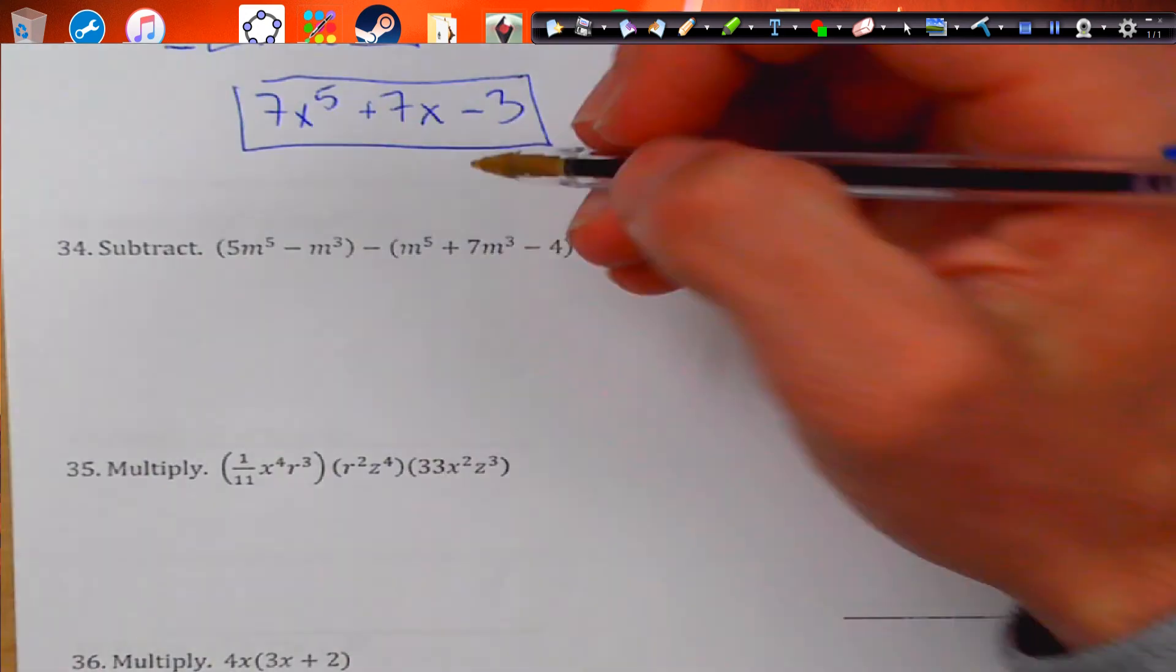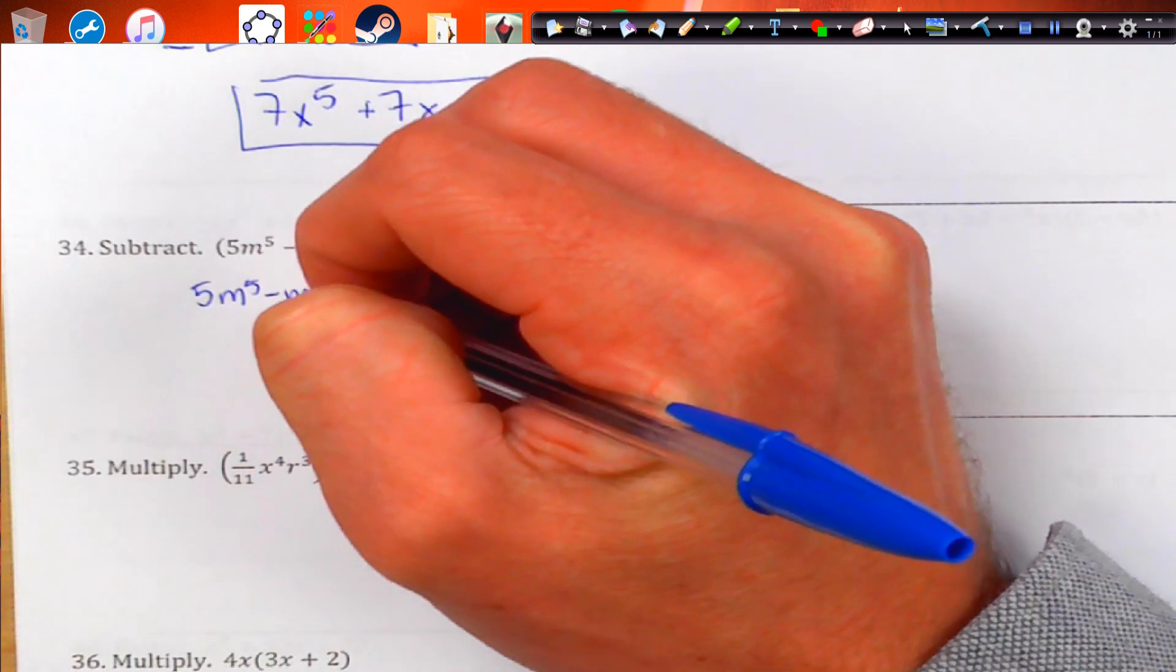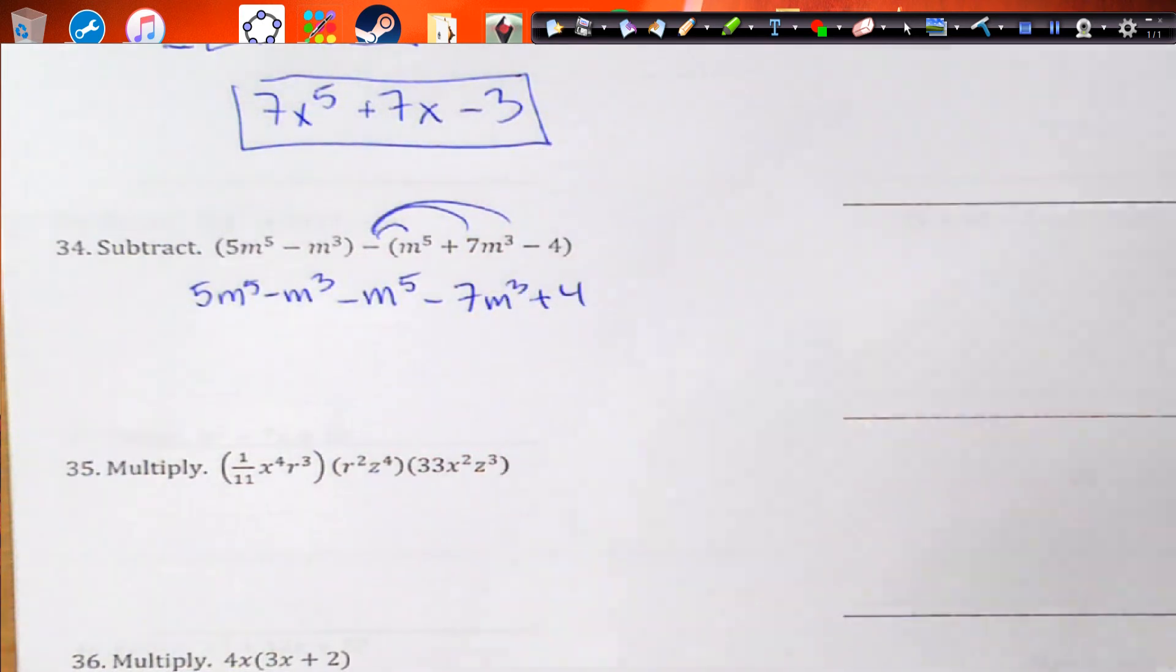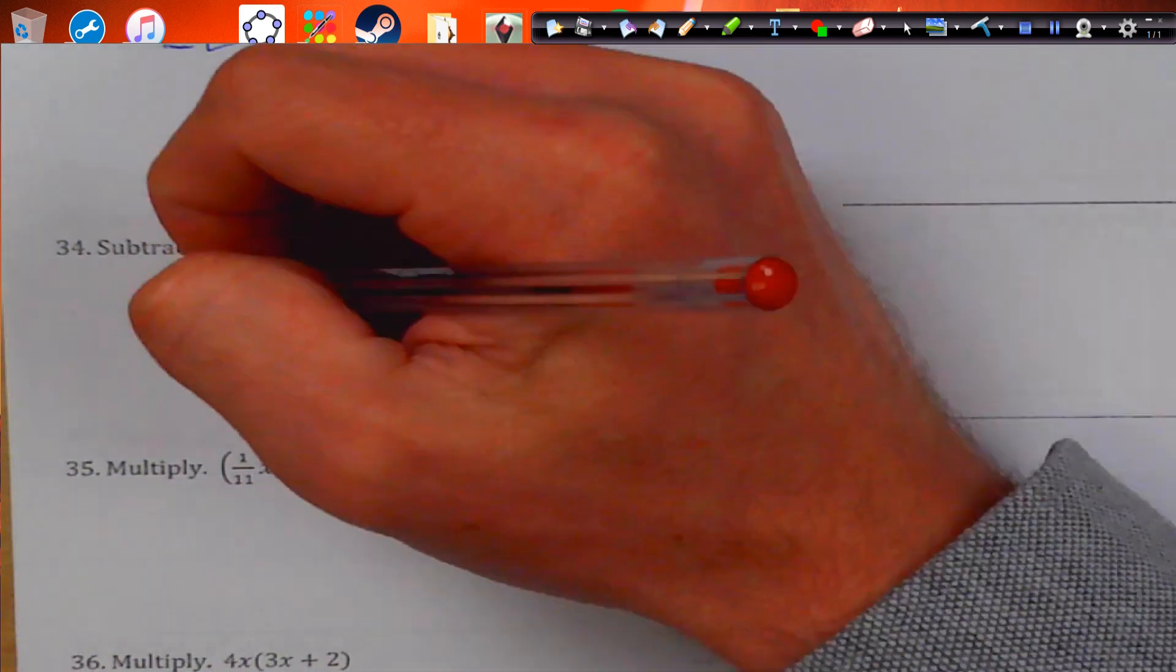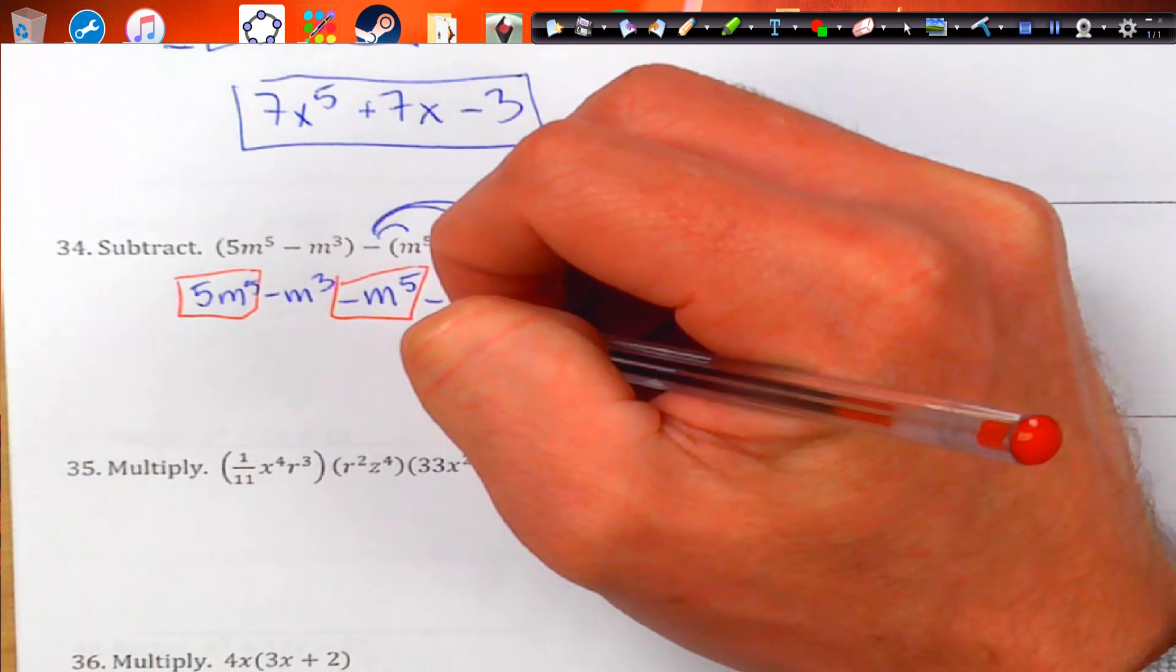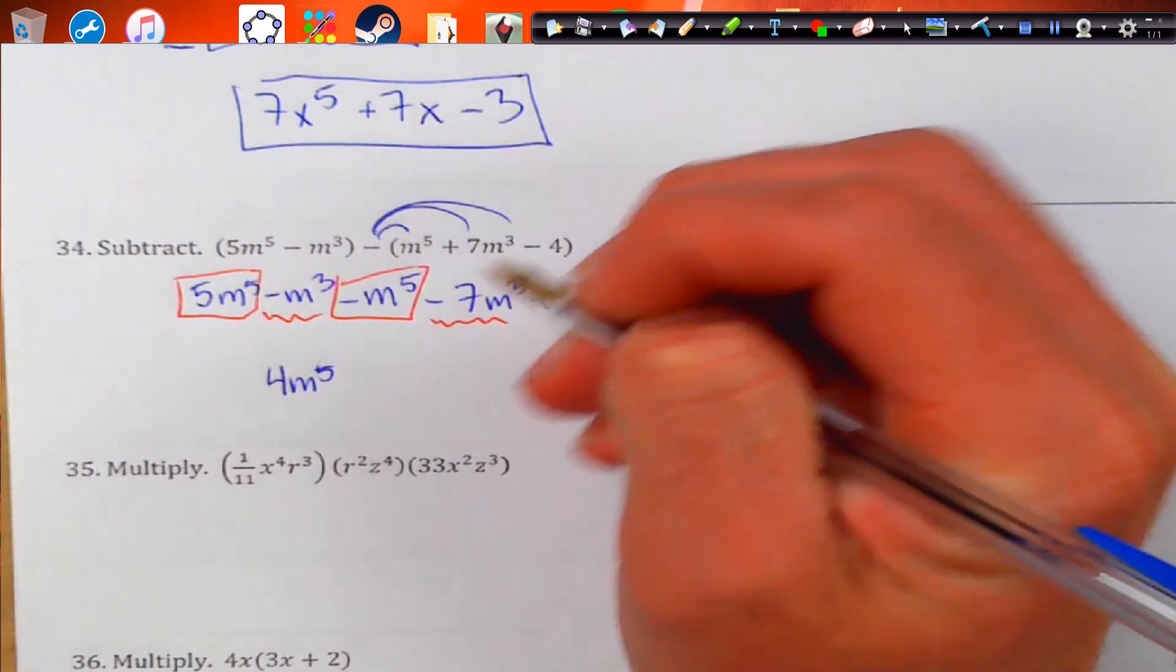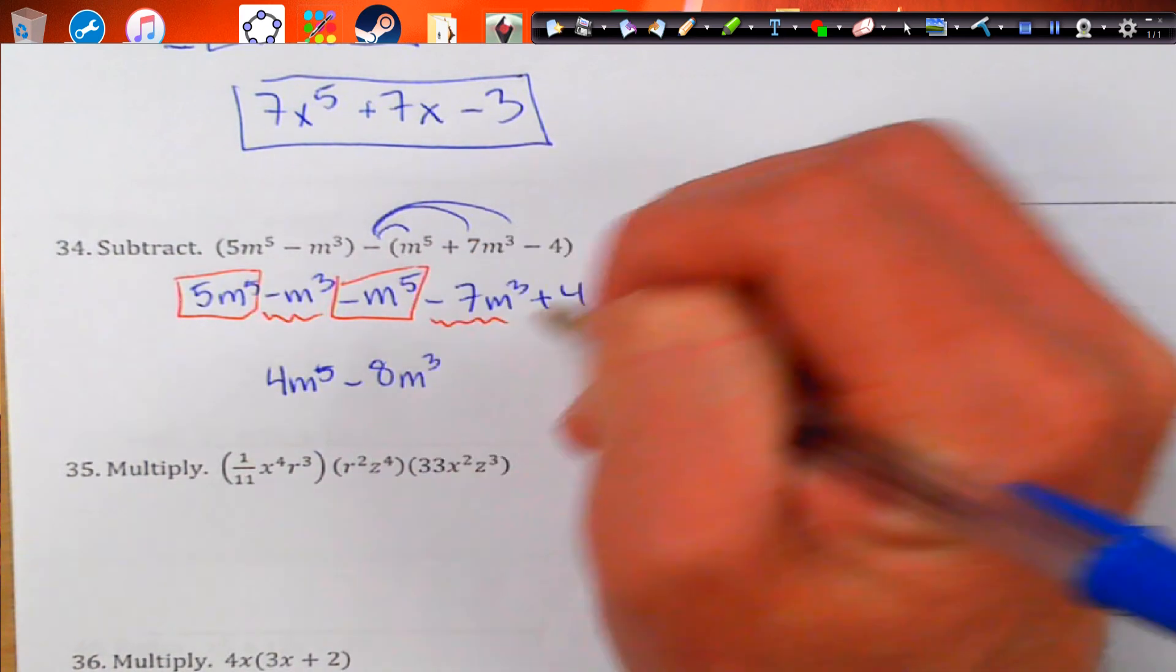First thing here, we have to distribute the negative. So we're going to get 5m to the 5th minus m to the 3rd minus m to the 5th minus 7m to the 3rd plus 4. So all the signs changed. And then we want to identify our like terms. So this guy is going to be combined with that guy. That's going to become 4m to the 5th. That's going to be negative 8m to the 3rd and positive 4.